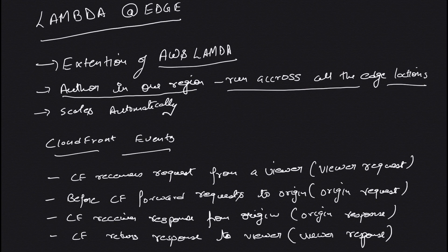The best thing about Lambda at Edge is that it scales automatically based on the number of requests coming to CloudFront. You don't need to worry about servers or capacity. The CloudFront events for which you can configure Lambda functions are basically four.